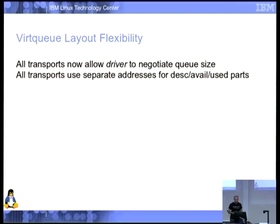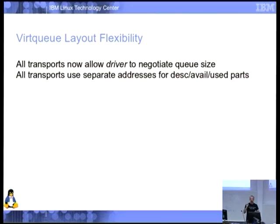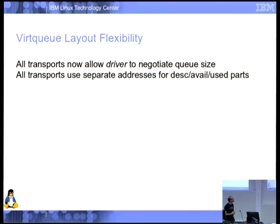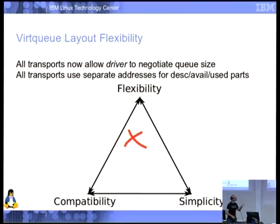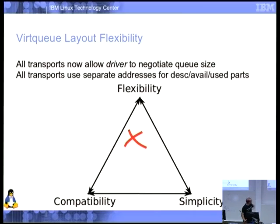We fix this in two ways. One: the driver for all transports can now negotiate the size — sometimes the device sets a maximum, but the driver can say 'I'm only going to use two descriptors' because it's OpenBIOS or coreboot and just wants to get to the real OS without wasting memory. Two: those bits no longer have to be contiguous, so even with large descriptors you can have three smaller chunks. This introduces a flexibility vs. simplicity trade-off, but it's actually quite important.